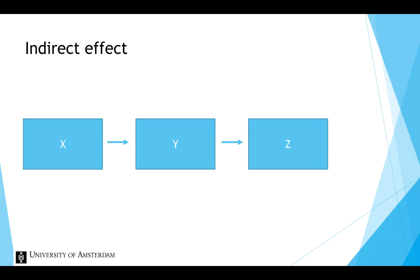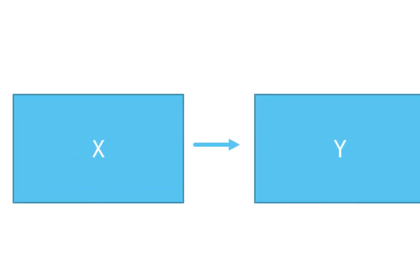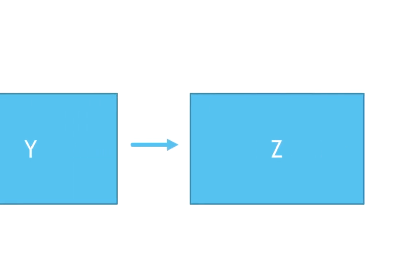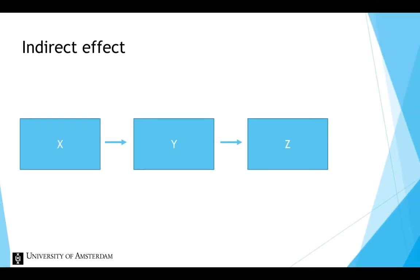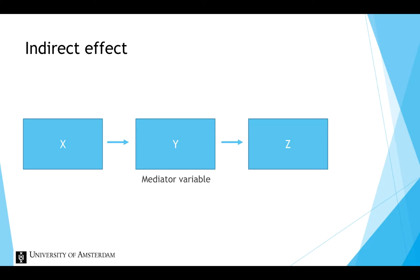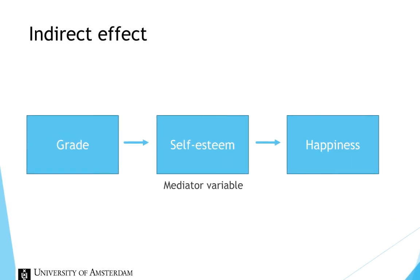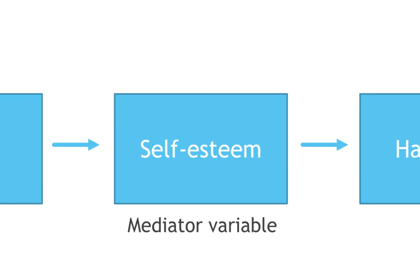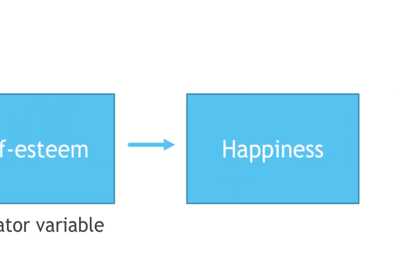The second type of causal relationship is an indirect effect. In this example, x has an indirect effect through y on z. A change in x leads to a change in y, and in turn a change in y leads to a change in z. Variable y is also called a mediator variable. For example, grade has an indirect effect through self-esteem on happiness. A change in grade leads to a change in self-esteem, and a change in self-esteem leads to a change in happiness.